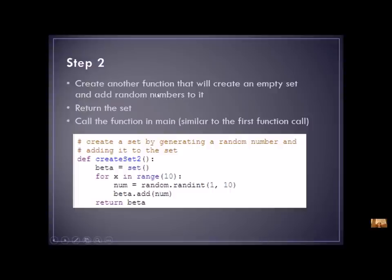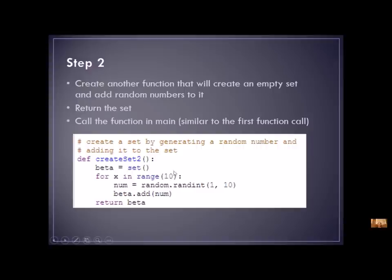For step two, you're going to create another function. This time, instead of creating the list first, we're just going to use the add method and create the set as we go. You're going to return this set and call it in the main function. When I'm creating my second set, instead of creating an empty list, create an empty set. You can still use your for loop, get a random number, and instead of append, you're going to use add. Will this give me 10 random numbers in my set? Not necessarily, because the set is not going to have any duplicates. So when I'm getting my random numbers, if I get a duplicate, it's just not going to add it to the set. Even though I'm getting 10 random numbers, that does not mean that my set will have 10 numbers in it.